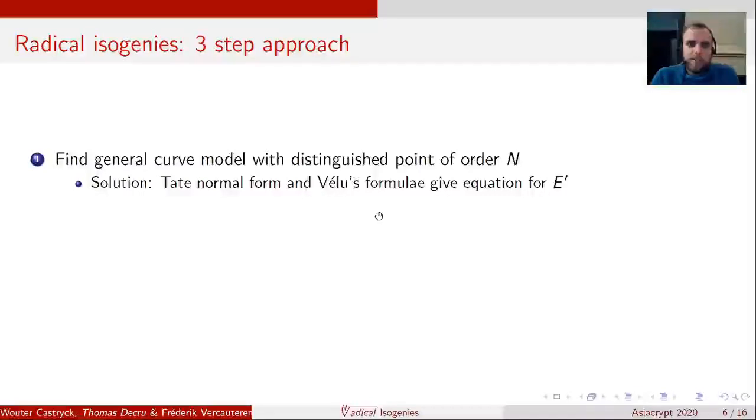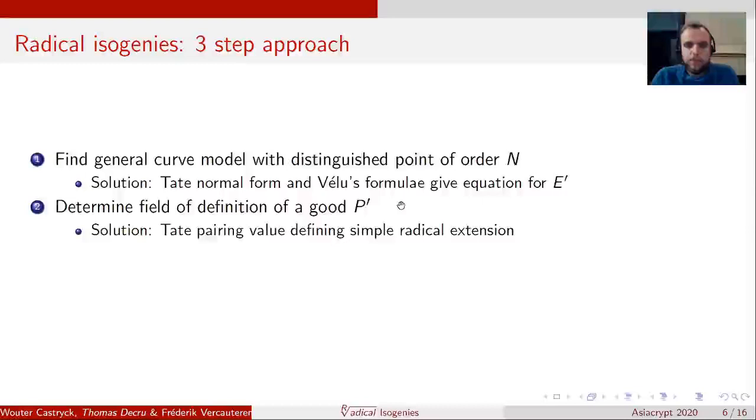And how will we do this? With something called radical isogenies, and it's a three-step approach. First, we'll find a general curve model with a point of order N. This is the Tate normal form, and we'll use Vélu's formula to give the equation for the isogenous curve. The second step is the main contribution of our work. We'll find the field of definition for a point P prime on E prime that has order N as well. For this, we'll need the Tate pairing, and we'll also need simple radical extensions. In the third step, when we have the field of definition of P prime, we still need to determine the coordinates. And for this, we'll use the division polynomials.